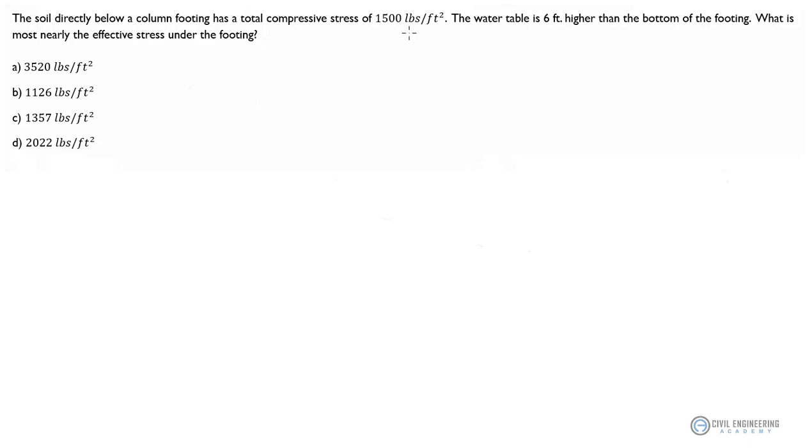It reads like this: the soil directly below a column footing has a total compressive stress of 1,500 pounds per foot squared. The water table is six feet higher than the bottom of the footing. What is most nearly the effective stress under the footing? We have an array of possible answers here.